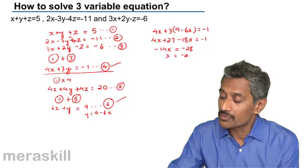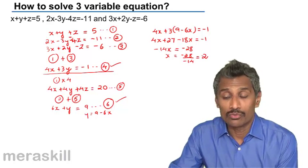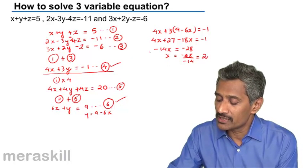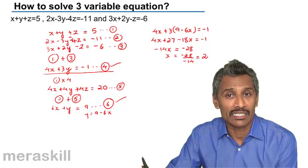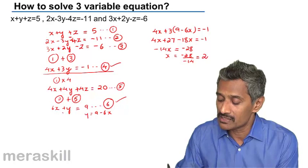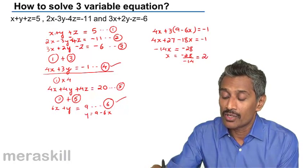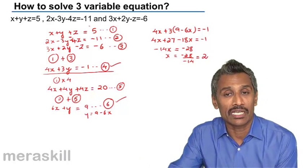So minus 14x is equal to minus 1 minus 27, minus 28. So x would turn out to be minus 28 upon minus 28, which is 2. And thus after that, you can substitute the x value and get the value of y. And simultaneously once you get x and y, you can substitute in the first equation and get the value of z.